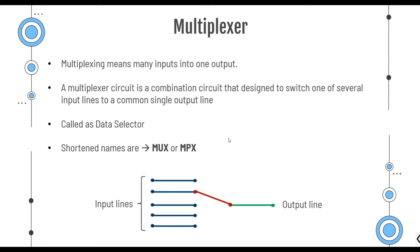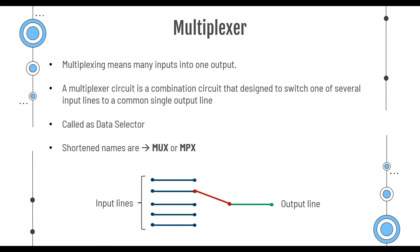This is a basic representation of a multiplexer. There are some input lines and there is a selector. This selector selects one of these inputs and gives it to a single common output line. Multiplexers are classified into four types: 2-to-1 multiplexer, 4-to-1 multiplexer, 8-to-1 multiplexer, and 16-to-1 multiplexer.